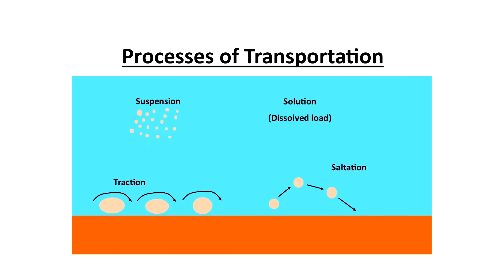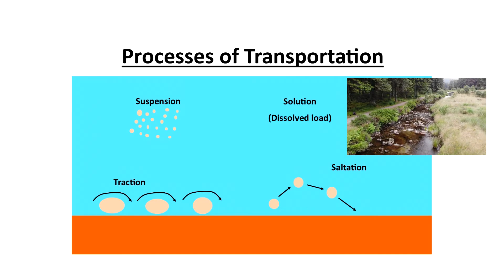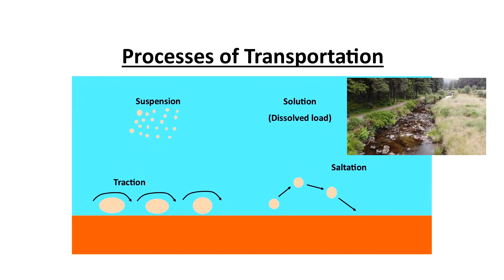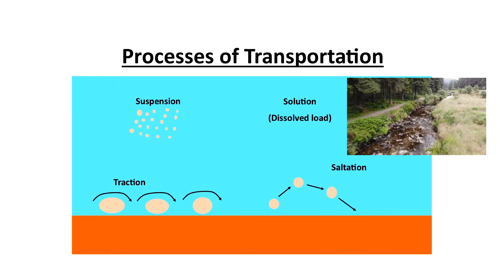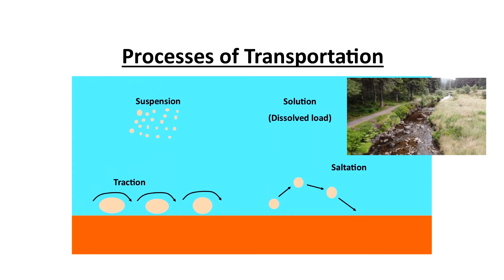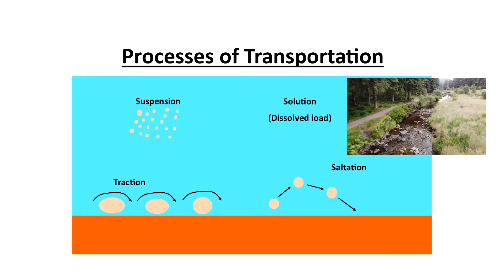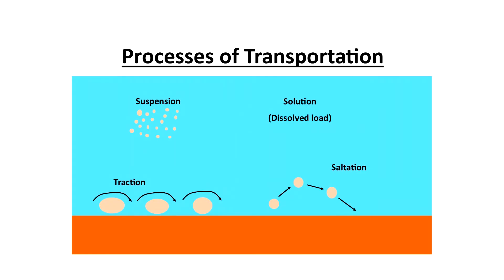Transportation sees the load move down the river and this happens through four different processes also. We've got traction, which is when large particles roll down the riverbed. Saltation is when slightly smaller rocks bounce down the riverbed. Suspension is when small sediment is held up and carried within the river's flow, and solution sees the dissolved load move down the river.